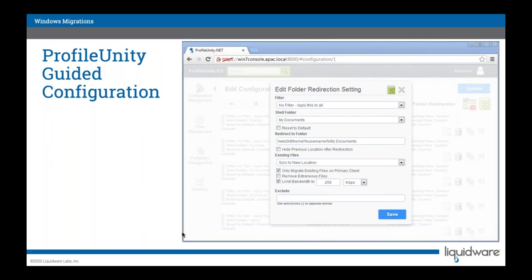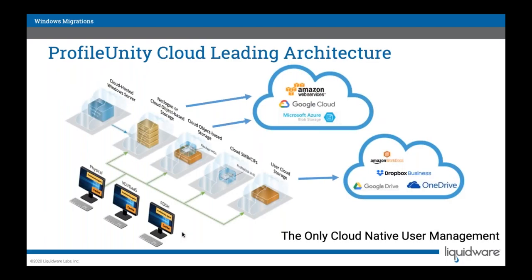Within the UI, folder redirection settings are steered to object-based storage. We redirect a folder like My Documents and sync it to a new location, which can ensure it syncs to an area where OneDrive or Dropbox can pick it up. You can also limit this based on bandwidth.